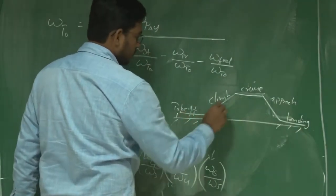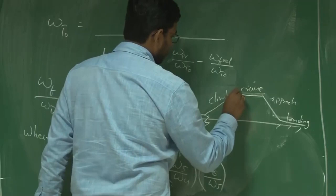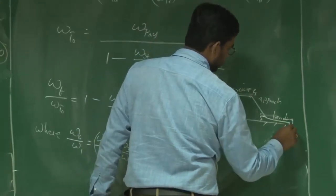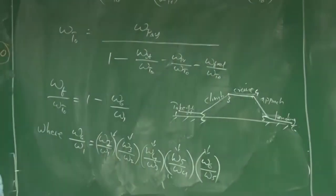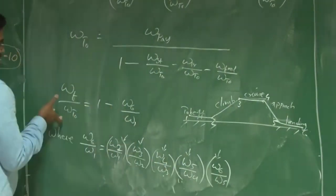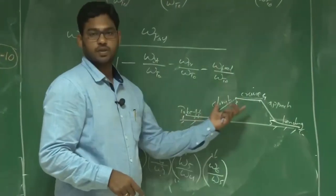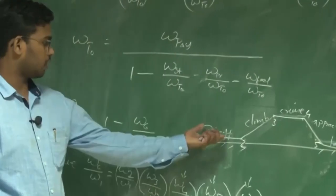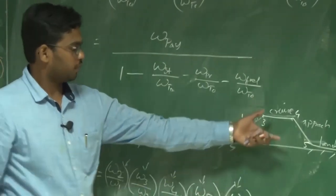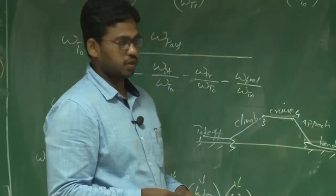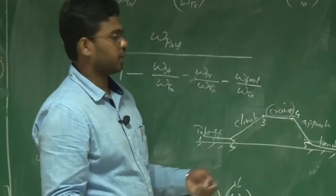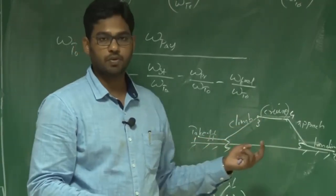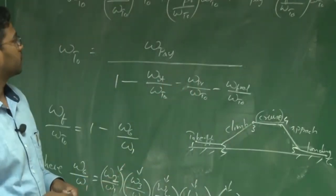We segmented the mission based on the flight dynamics during each phase. These weight fractions represent the fuel weight consumed during each phase. For takeoff, climb, approach, and landing, weight fractions are taken from the historical database. What differs from UAV to UAV is the cruise fuel consumption, which mainly depends on the mission requirements.